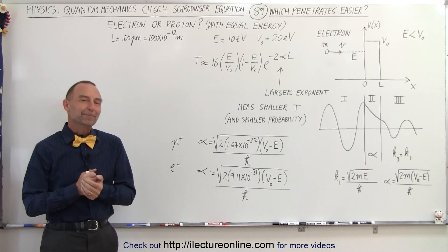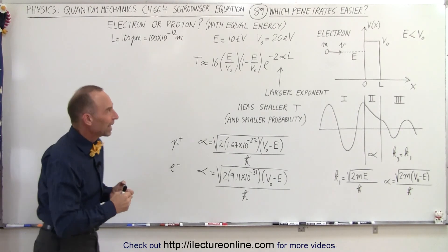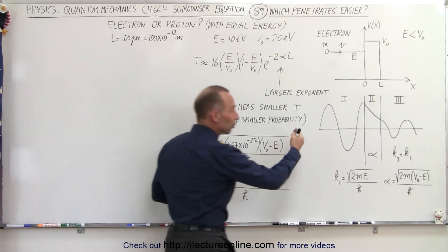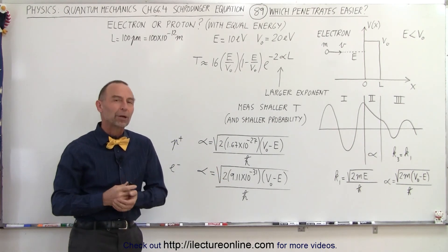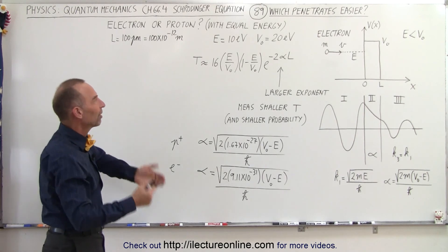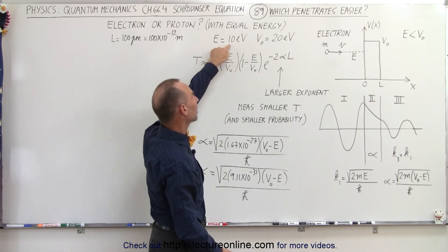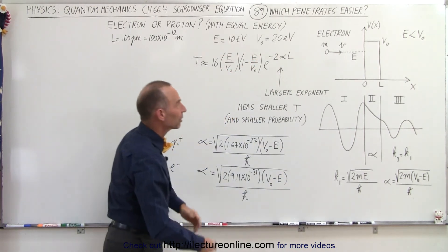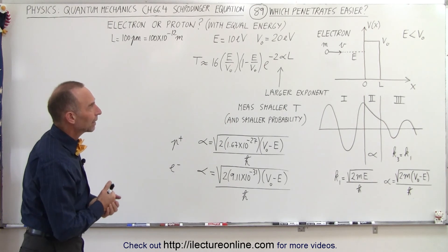Welcome to ElectronLine. To get a better conceptual understanding of the transmission coefficient and the probability of a particle making it through a barrier, let's compare what an electron would do and what a proton would do if they had the same energy. Let's say both the electron and the proton had an energy of 10 electron volts and they're trying to get through a barrier where the potential of the barrier is 20 electron volts.